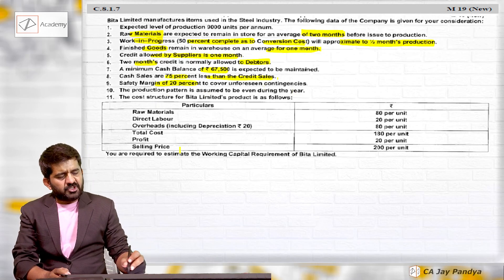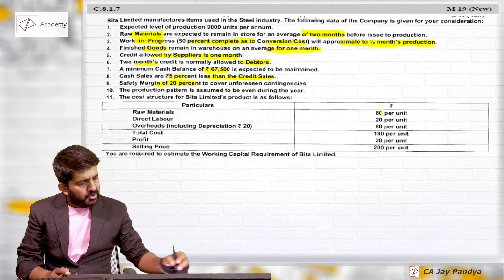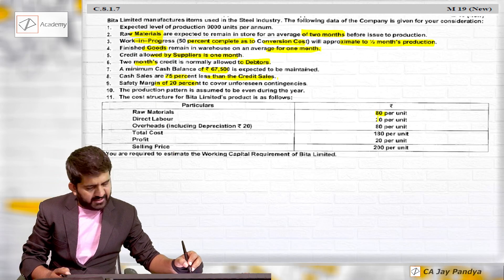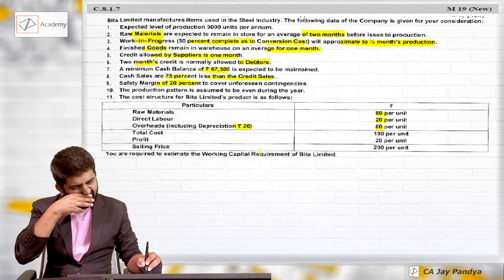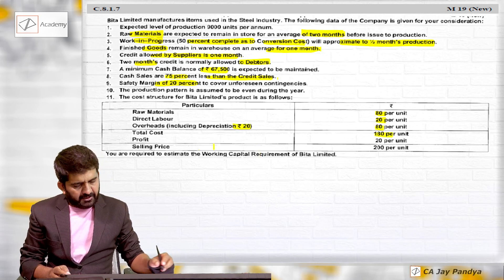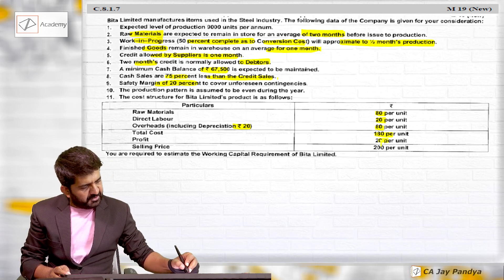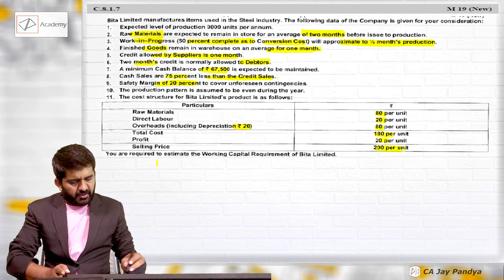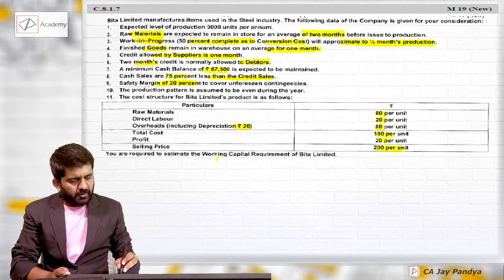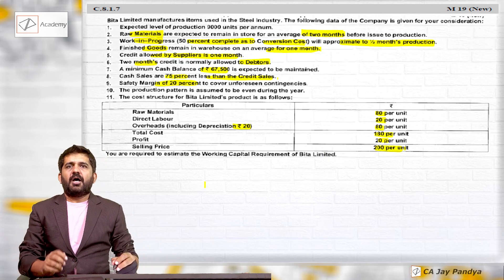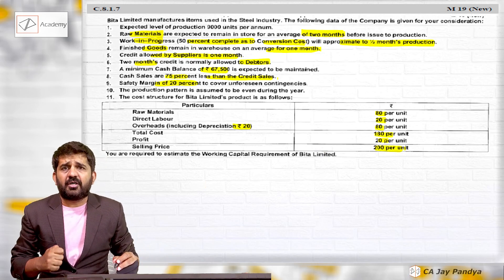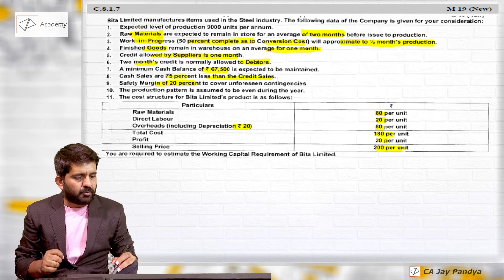The cost structure of Beta Limited is as follows: raw material is ₹80, direct labor and overhead are conversion costs, out of which ₹20 is depreciation. Total cost is ₹180 per unit, profit is ₹20, and selling price is ₹200. We are required to estimate the working capital requirement of Beta Limited. I will be finding out all current assets minus current liabilities to get the working capital requirement.